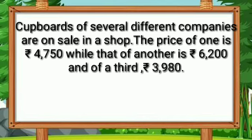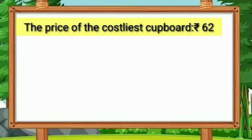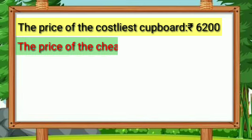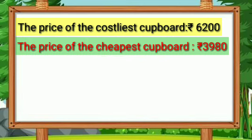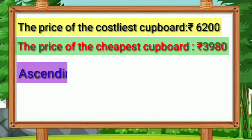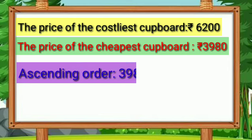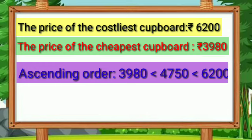The most costly cupboard is Rs. 6,200. The price of the cheapest cupboard is Rs. 3,980. Let's arrange in ascending order. Rs. 3,980 is smaller than Rs. 4,750. Rs. 4,750 is smaller than Rs. 6,200.